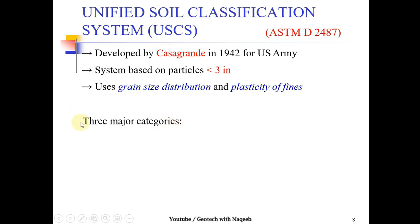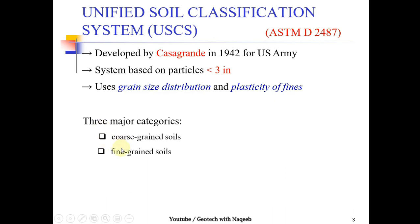There are three major categories in which we can divide soil particles. The first is coarse grain soil: if the percentage passing sieve number 200 is less than 50 percent, the soil is termed coarse grain. If the percentage passing sieve number 200 is more than 50 percent, the soil is categorized as fine grain soil.